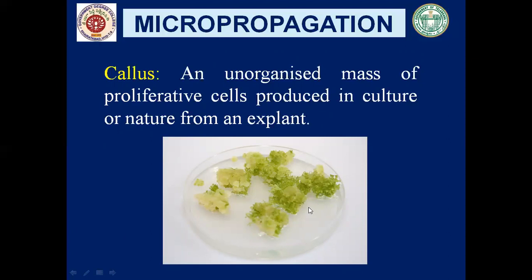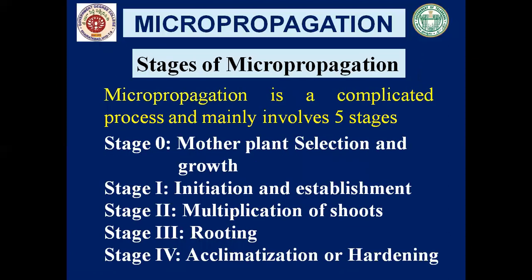Now we'll see what are the different stages of micropropagation. Micropropagation is a complicated process and it involves five stages. Stage 0 is mother plant selection and growth. Stage 1 is initiation and establishment. Stage 2 is multiplication of shoots. Stage 3 is rooting. Stage 4 is acclimatization or hardening.